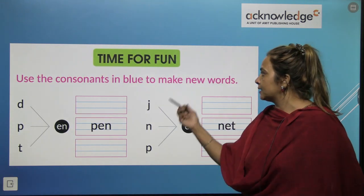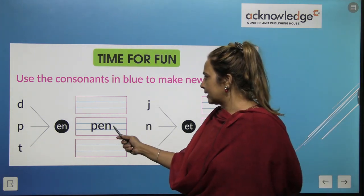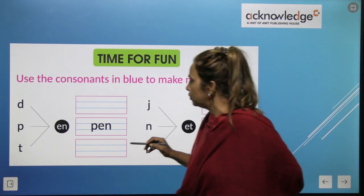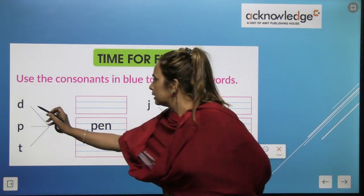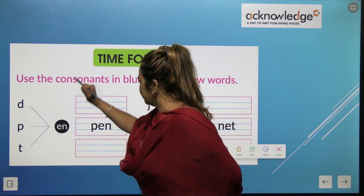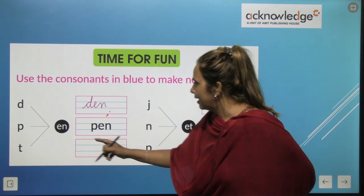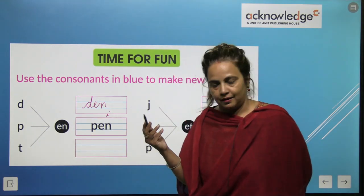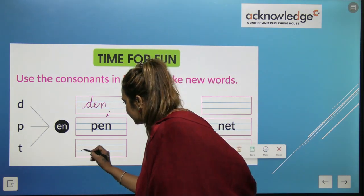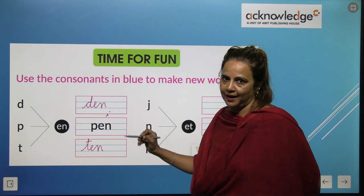Time for fun. Use the consonants in blue to make new words. So this is pen. But tell me, what we have to make the word with the help of consonants. Yes, very good. D, E, N, den. T, E, N, ten. And P, E, N, pen. It's already written pen. So there are three words with the help of consonants. Den, pen, ten.